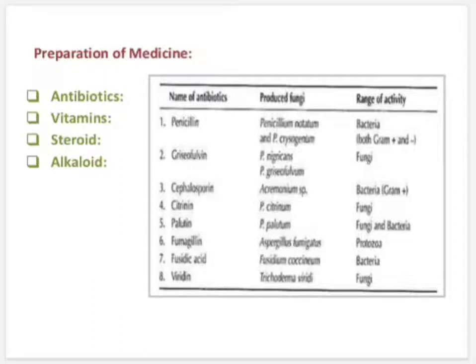Antibiotics are the metabolic product of some microorganisms which are active against other microorganisms. The wonder drug Penicillin comes from Penicillium notatum, and the drug Fusidin is derived from Fusidium coccineum.